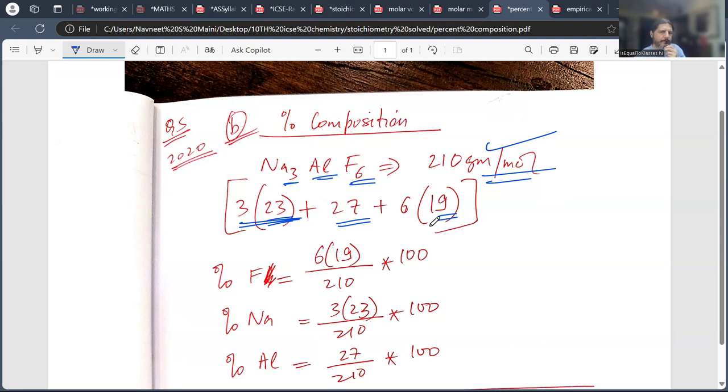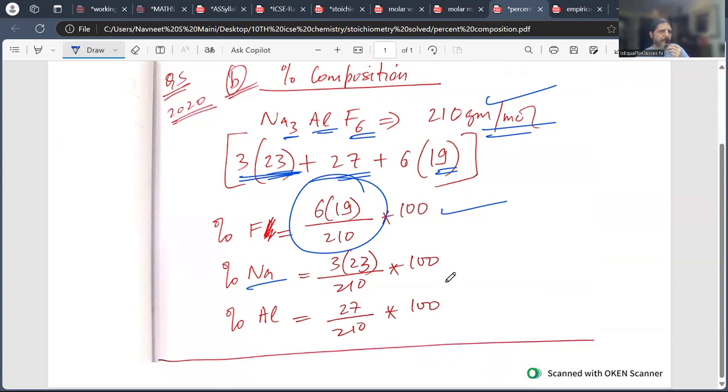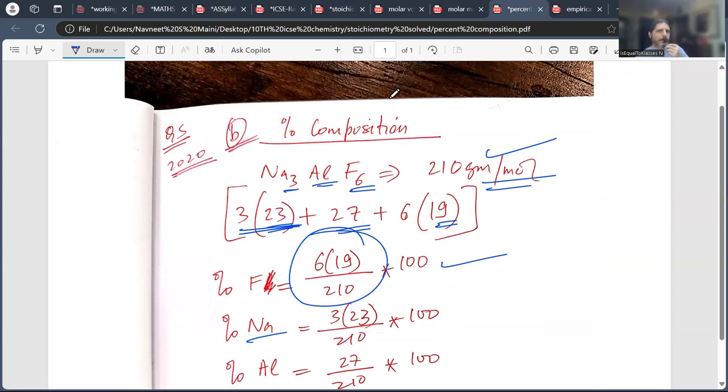What is sodium? How will it be? 6 into 19 upon molar mass of sodium. Which you can write in the exam and you don't have any trouble.